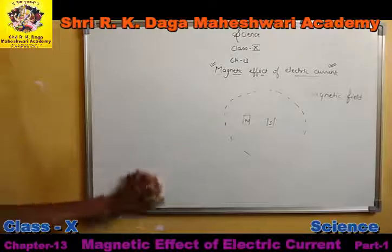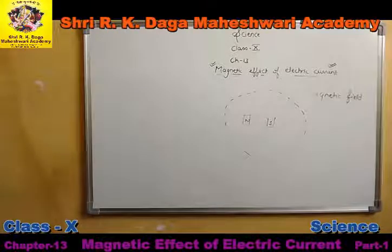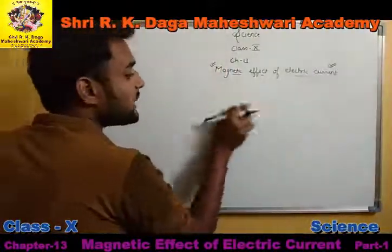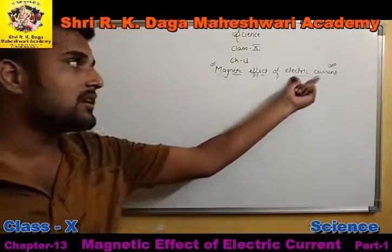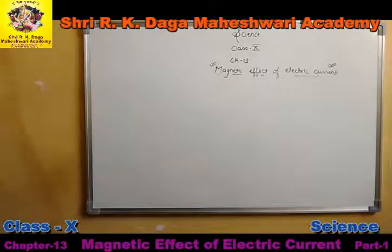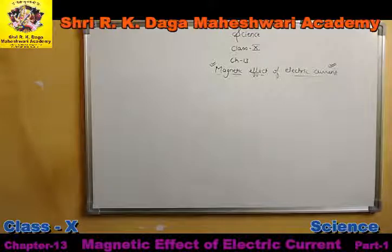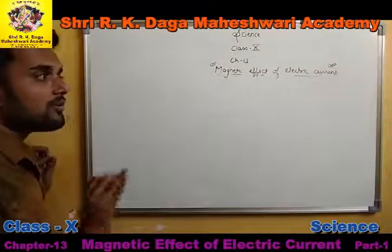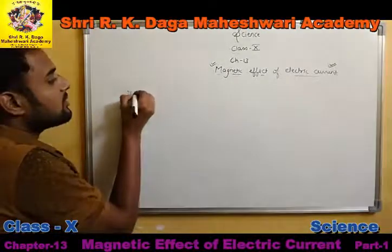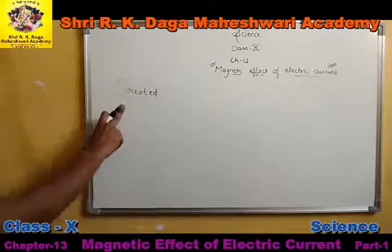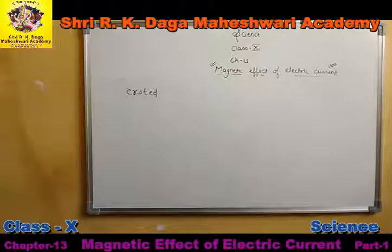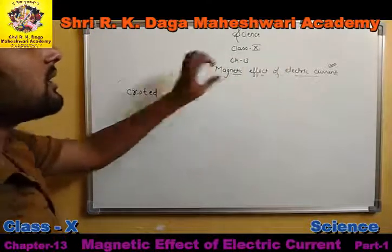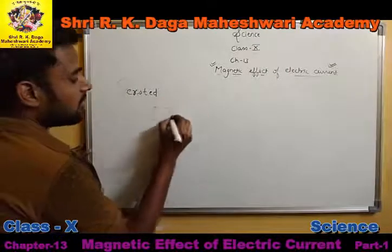One more thing we have to study here is magnetic lines of forces, which we will discuss later. The title of this chapter — Magnetic Effect of Electric Current — means that electricity and the magnetic field are related. Some experiments were done by Oersted. Oersted was a scientist who discovered that electric current affects the magnetic field.